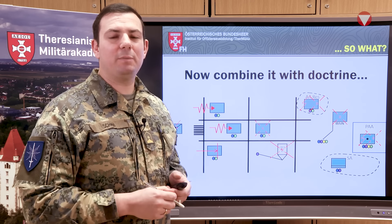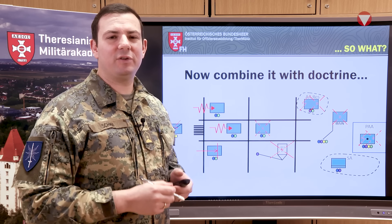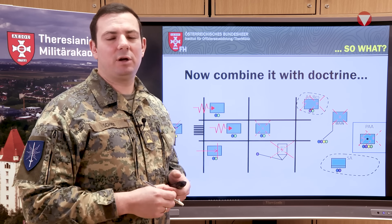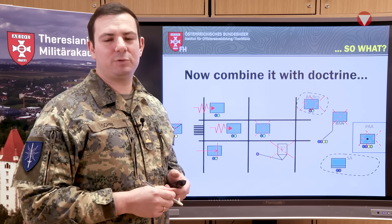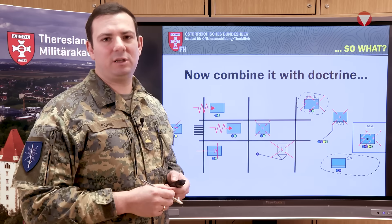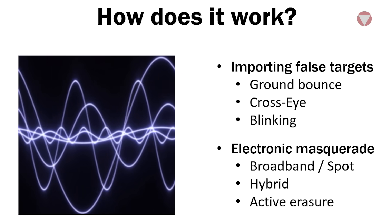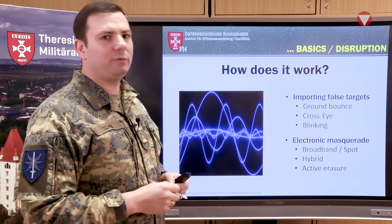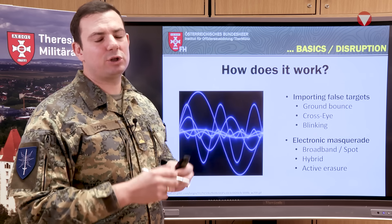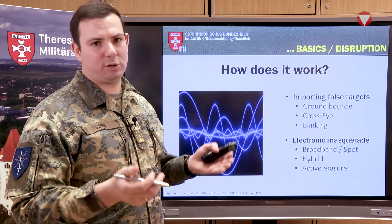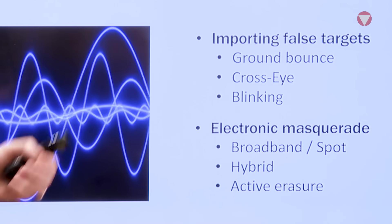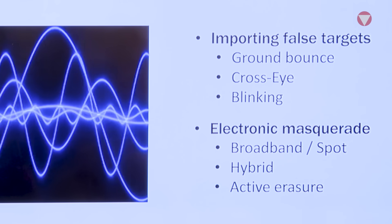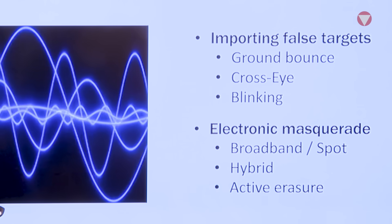Now that we understand the basics of signal intelligence, let's look at deception, disruption, and interference. Basically there are two major parts: on one hand, importing false targets, and on the other hand, electronic masquerade.